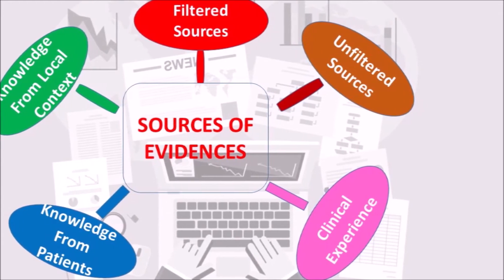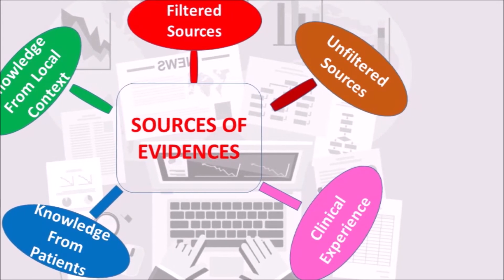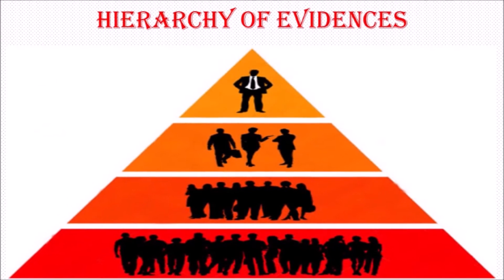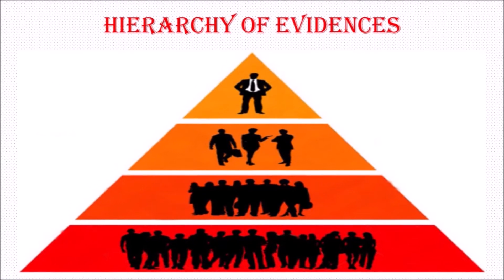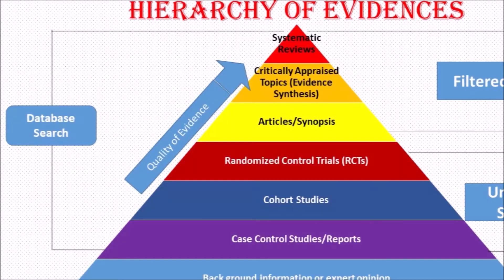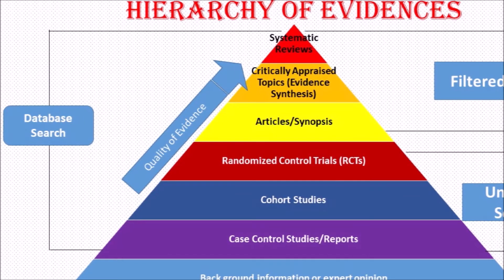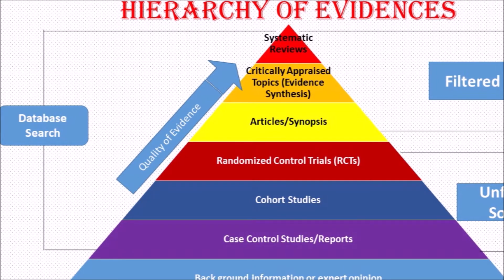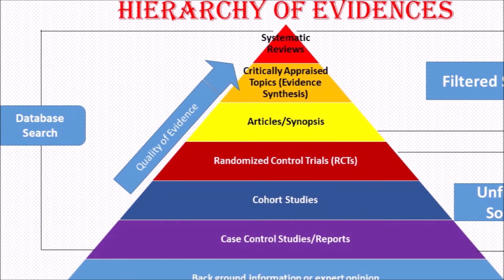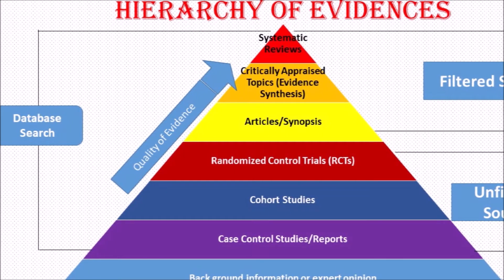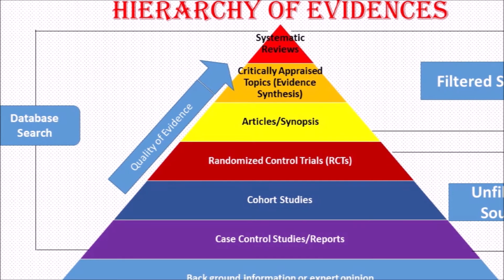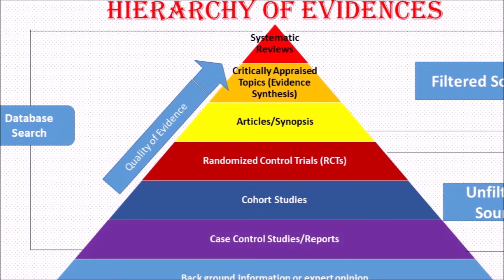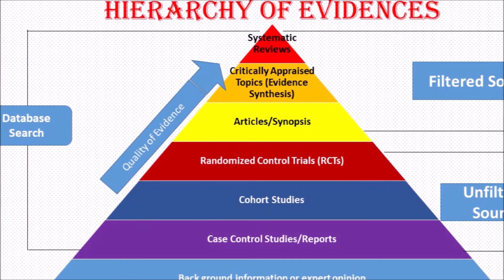Friends, these are the sources where you will get evidences. Next, we will see the hierarchy of evidences. In a hierarchy, we go for easily available sources first, and once we meet the required satisfaction in basic things, we take the next step. Likewise, in evidence-based practice, when finding the evidences, we follow a similar approach.